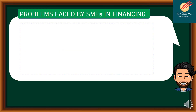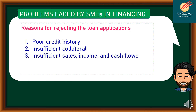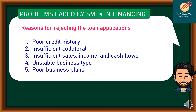Potential creditors cite the following reasons for rejecting loan applications: number one, poor credit history; number two, insufficient collateral; number three, insufficient sales, income, and cash flows; number four, unstable business type; and number five, poor business plans. The lack of reliable information about SMEs makes it difficult for fund providers to assess their creditworthiness. Banks find it easier to evaluate big companies where there is an abundance of public disclosure, while for SMEs, limited information is available, which derails their growth.